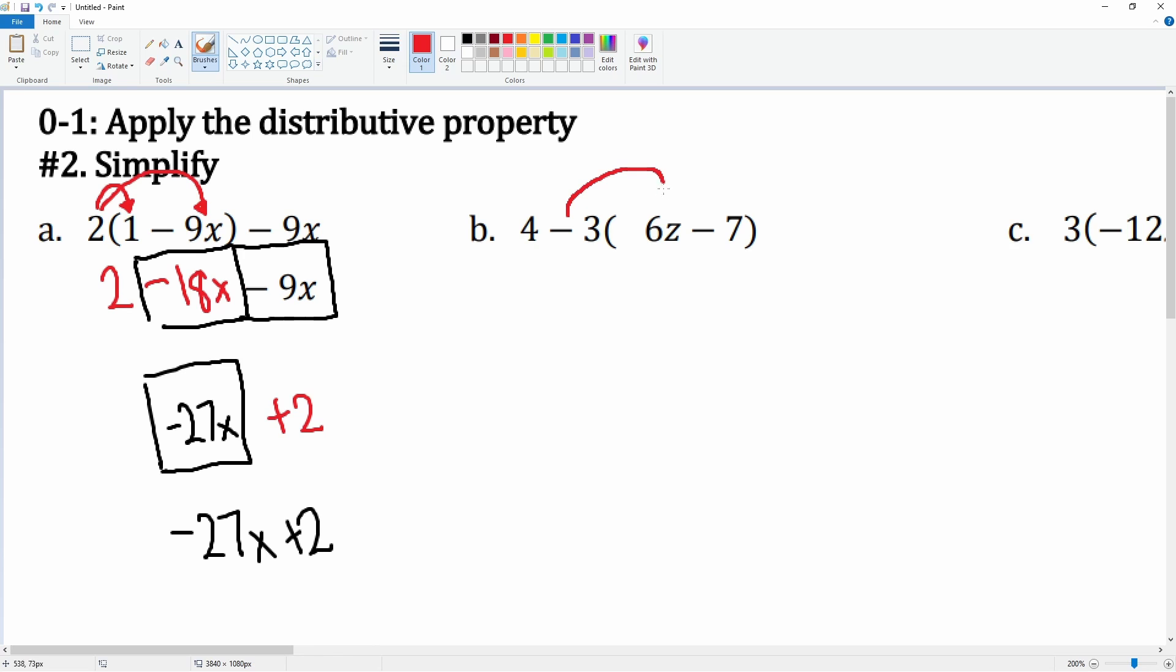Negative 3 times 6z—that gets you negative 18z. Then you have negative 3 times negative 7, that gets you a positive 21.